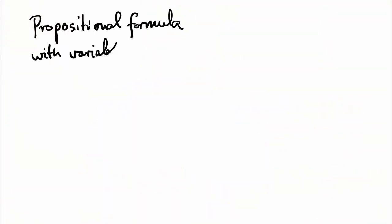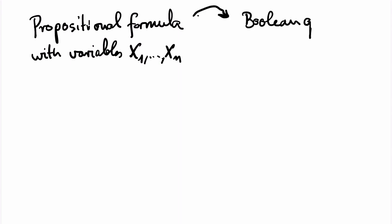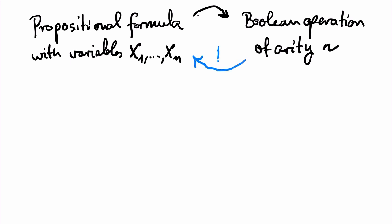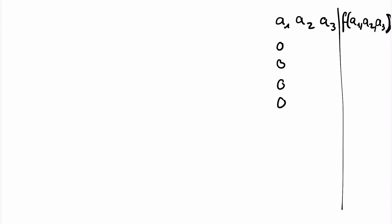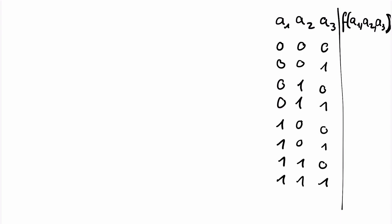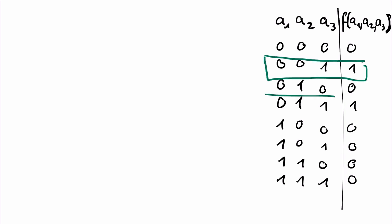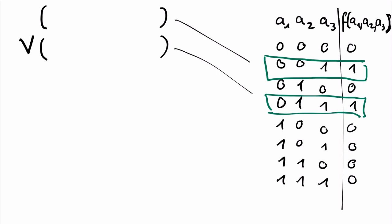In the first part of the video, we have seen that every propositional formula describes a Boolean operation. In the second part, we will show that we can go back: every Boolean operation can be described by a propositional formula. We will illustrate this with an example. Let's look at the following Boolean operation of arity 3 given by the table on the right. The operation returns 1 if and only if we are in the second line or the fourth line, and this suggests that we start our formula with an OR.